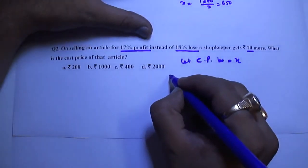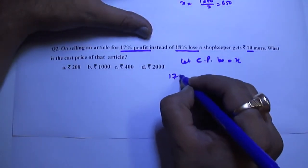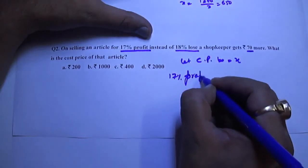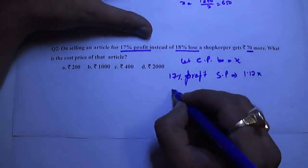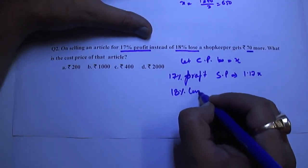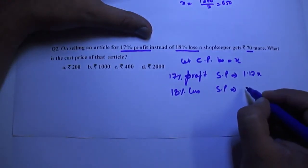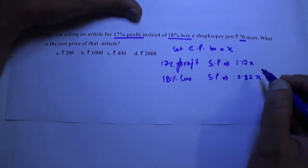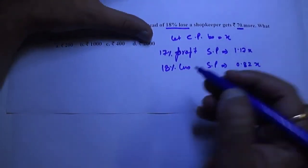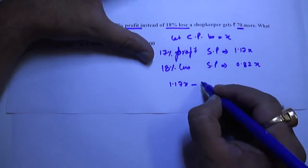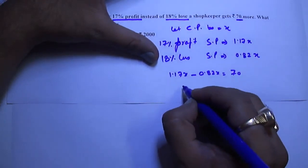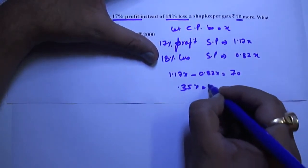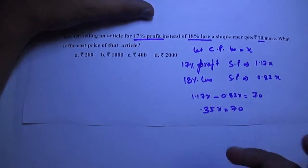Now, 17% profit then selling price would be 1.17X and 18% loss selling price would be 0.82X. And their difference is 70. 1.17X minus 0.82X gives us Rs.70. We will get 0.35X equals 70. Solving it we will get our answer.